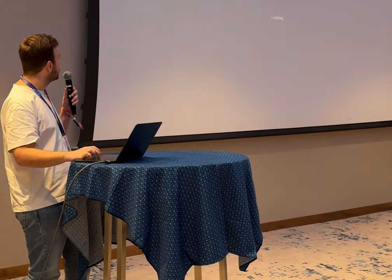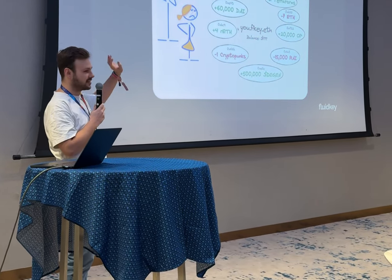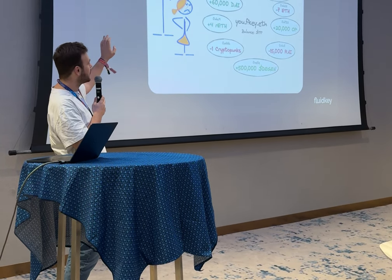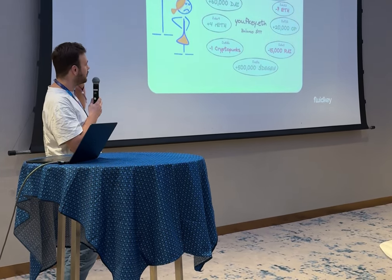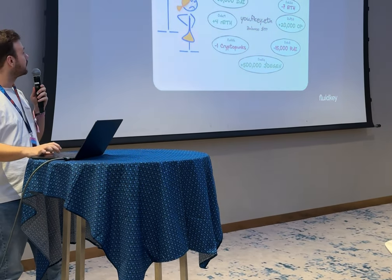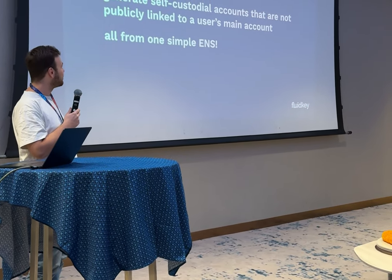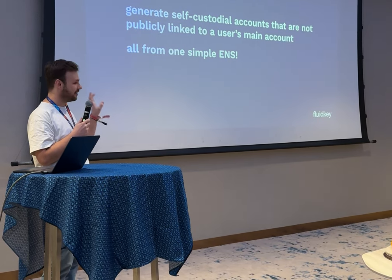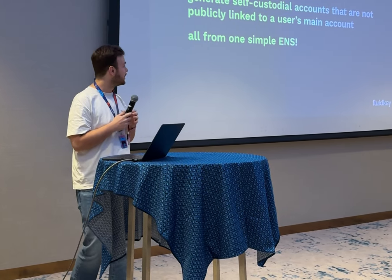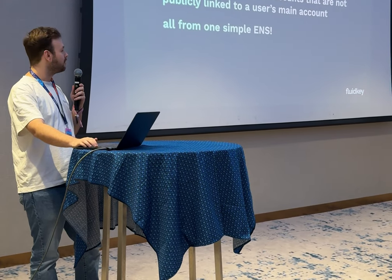So you basically get something like this: you have an ENS so everybody can still send you money easily — you share the same ENS with everybody — but you have segregated accounts you can manage separately and move things around without connecting everything. You can generate self-custodial accounts that are not publicly linked as your main account, all from one simple ENS. You don't have to ask anyone — just query the ENS and get a fresh address.